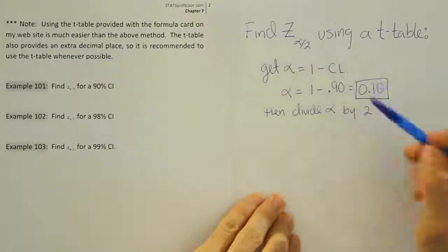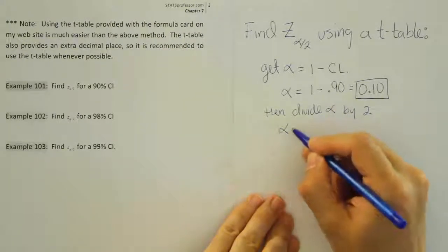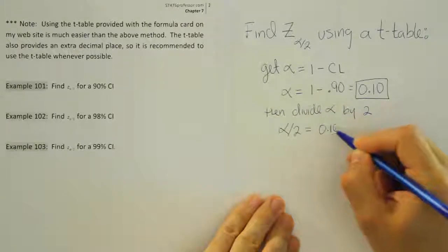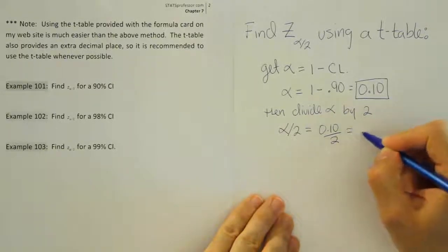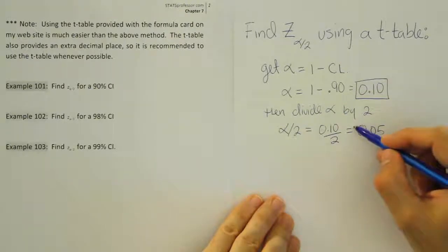So we'll say, alpha divided by 2 is then 0.10 divided by 2, which ultimately gives us 0.05. Or in other words, what's half of 10%? It's 5%.